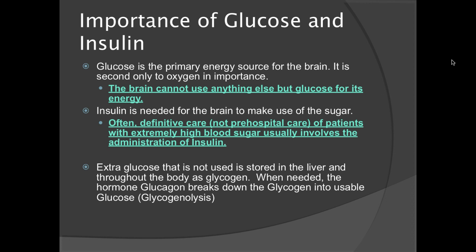Extra glucose that is not used is stored in the liver and throughout the body as glycogen. When needed, the hormone glucagon breaks down the glycogen into usable glucose. This is called glycogenolysis.